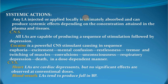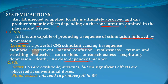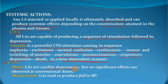Systemic action: local anesthesia in any form will ultimately be absorbed into the circulation and produce systemic effects depending upon the concentration attained in the plasma or tissues. In the CNS, all anesthetics produce a sequence of stimulation followed by depression in a dose-dependent manner. Cocaine is a powerful CNS stimulant causing a sequence of euphoria, excitement, mental confusion, restlessness, tremor and twitching of muscles, convulsions, unconsciousness, and ultimately respiratory depression and death, in a dose-dependent manner. In the CVS, it acts as a cardiac depressant but no significant effects are observed at conventional doses. Lignocaine, which is a local anesthetic, is used as an anti-arrhythmic drug. Local anesthetics tend to produce a fall in blood pressure.